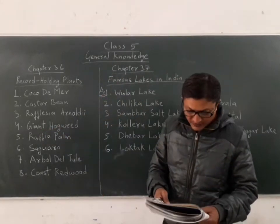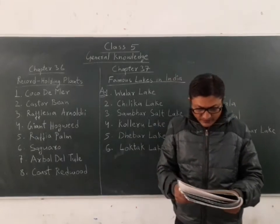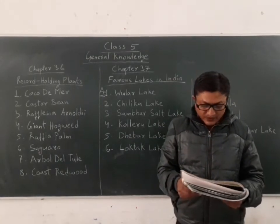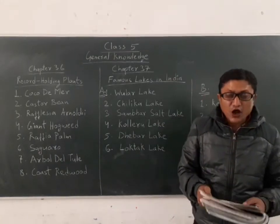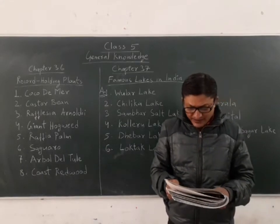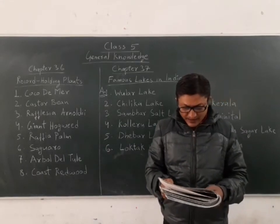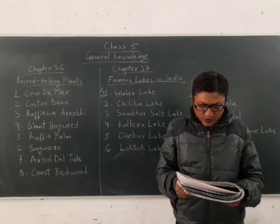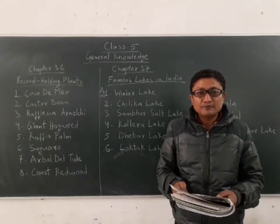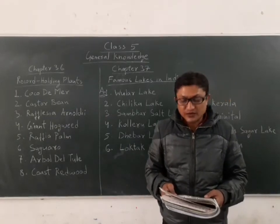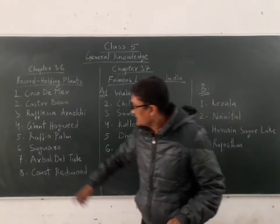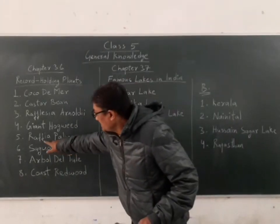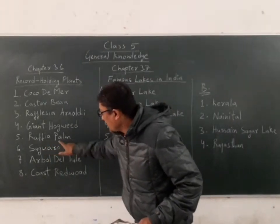Fifth description: it is the largest leaf with a length of 19.8 meters. The leaves of this plant measure about the same length as a tennis court. The answer is Raffia palm.